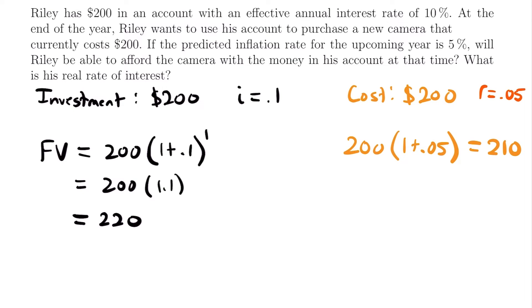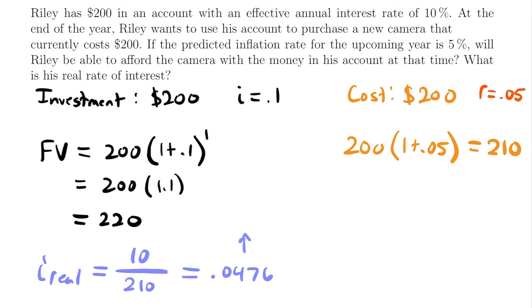Now we want to calculate his real rate of interest, and there are two ways to do this. We could use the formula from the previous example, or we could take a shortcut by dividing that $10 increase in purchasing power by the year-end cost of the item. The real rate of interest equals $10 divided by the year-end cost of the camera of $210. Dividing 10 by 210 gives a real rate of interest of 0.0476, which is 4.76%. That tells us Riley's purchasing power increased by 4.76% — he can now buy something worth 4.76% more than at the start of the year.